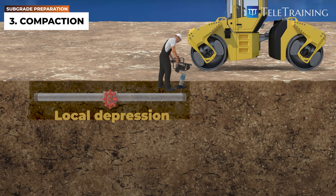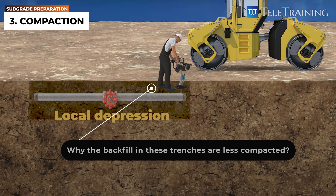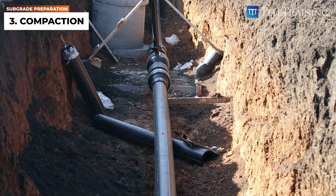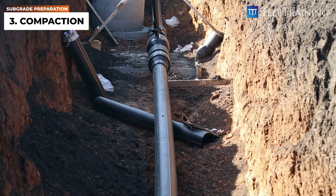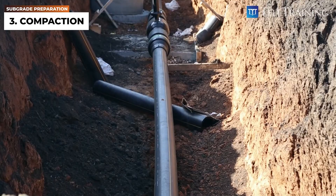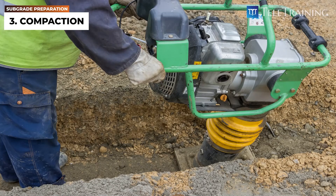Then, why is the backfill in these trenches less compacted? It is mainly because of the limited workspace of trenches. See? A compacting roller cannot fit in this narrow space.